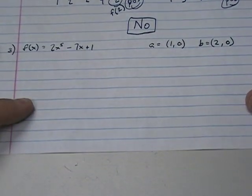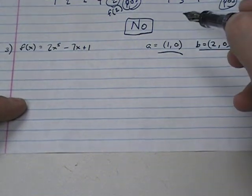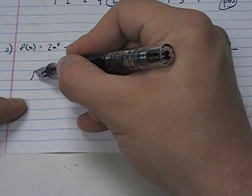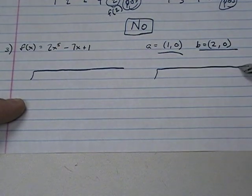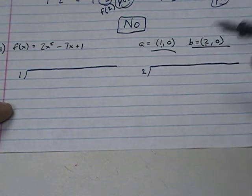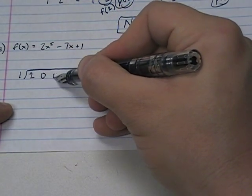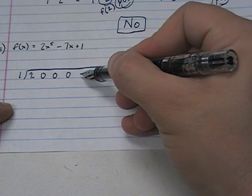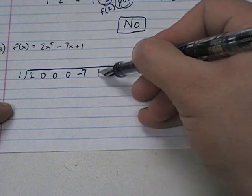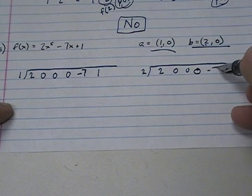So third one. Here's our two points. Here's our polynomial. Is there a 0 between A and B? So here's what we're going to do. Again, synthetic division. And over here, we're going to synthetically divide by 1. Over here, we'll synthetically divide by 2 because those are our x values. The coefficient for x to the fifth is 2. The coefficient for x to the fourth is 0. For x to the third is 0. For x squared is 0. For x to the first is negative 7. And then for our constant, which is x to the 0, is 1. 2, 0, 0, 0, negative 7, and 1.